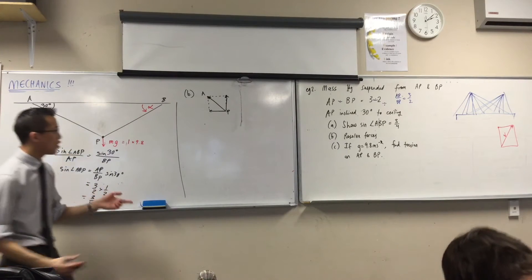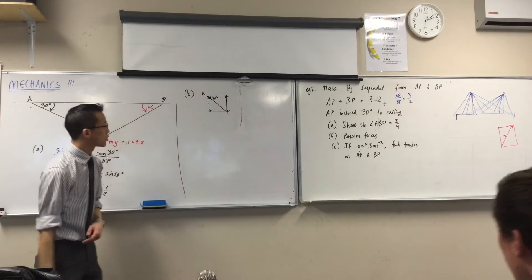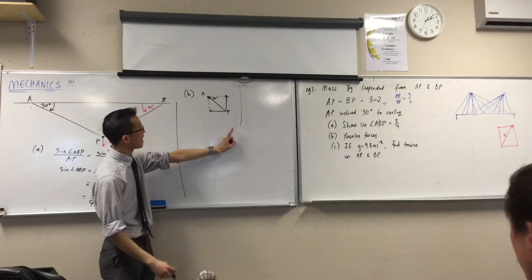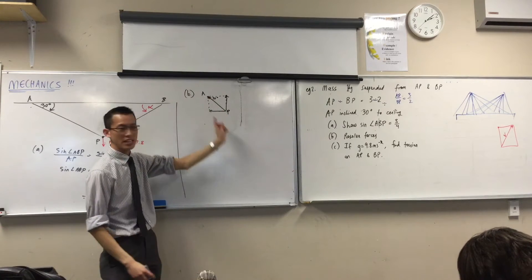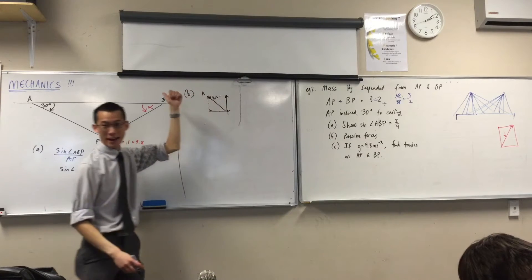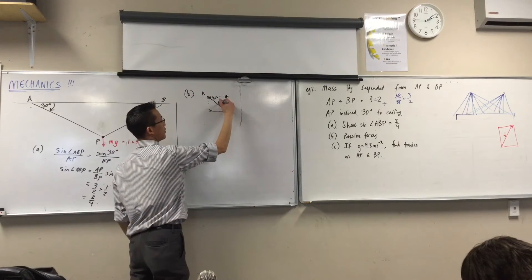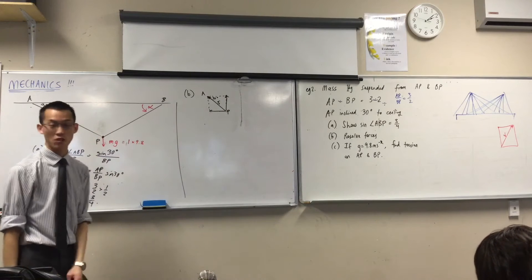Now, I know that this angle up in the corner is 30 degrees, so because this is AP over here, this is the tension in the string. The tension in the string is pulling that way so that the thing doesn't fall down. So if I call this T1 for tension 1.